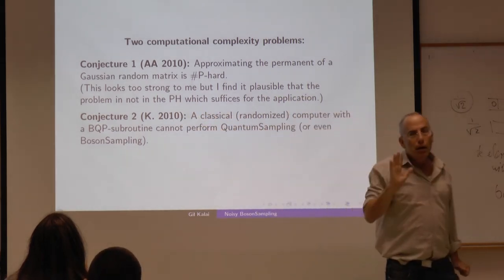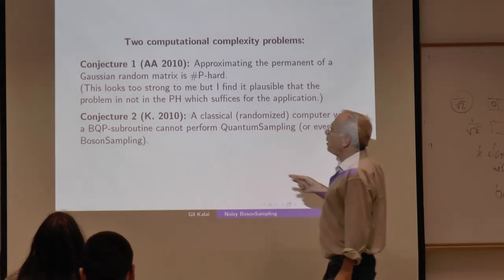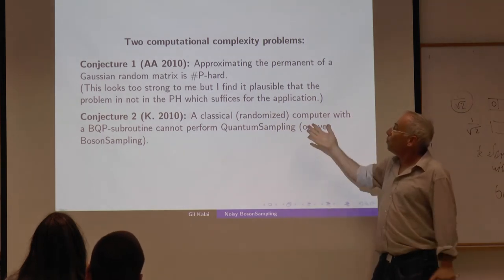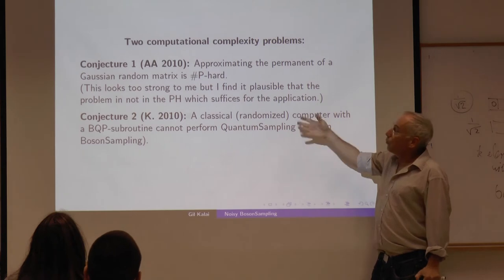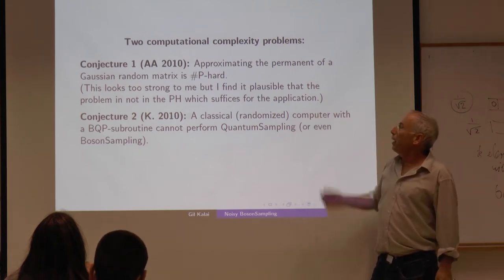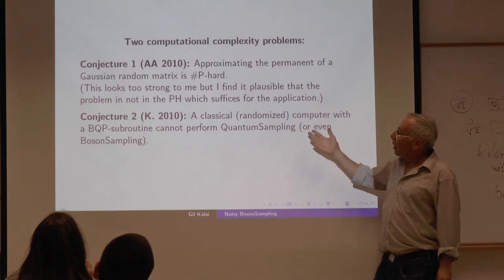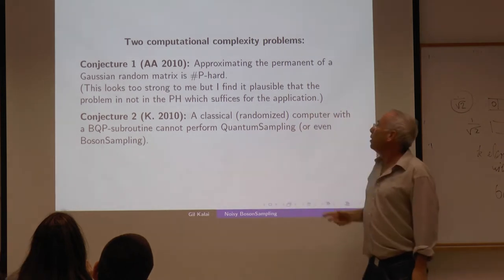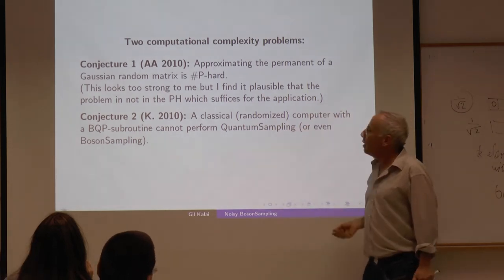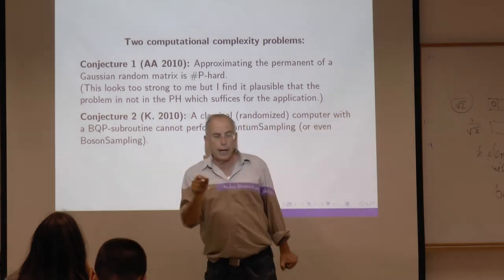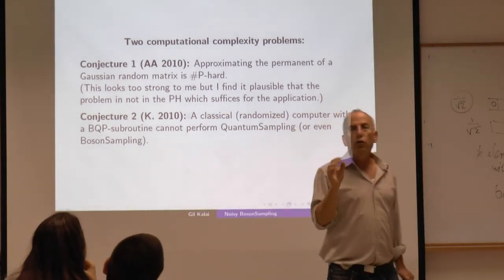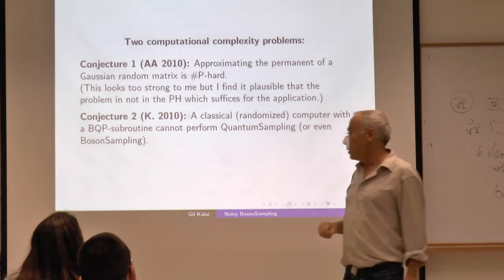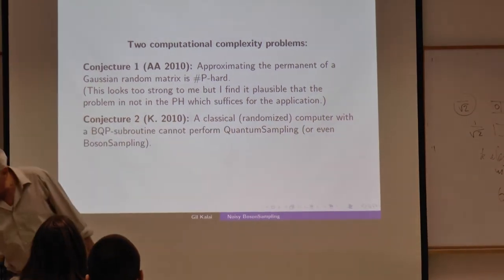Another conjecture I had in reaction to their paper: they proved that a classical computer which can do boson sampling causes the hierarchy to collapse. But I conjecture that even if you have a classical computer with a BQP subroutine, you cannot perform boson sampling. This means the sampling power of a quantum computer is much stronger than its power for decision problems — which is another interesting question.